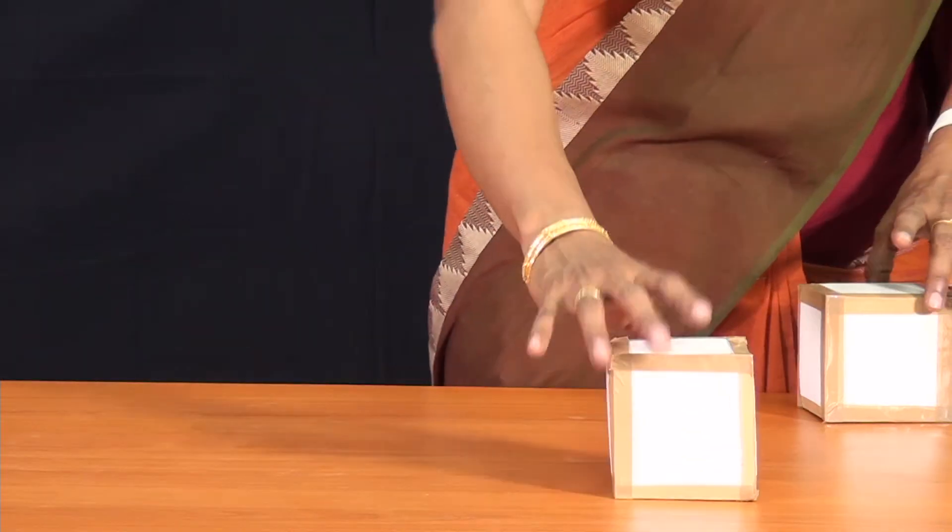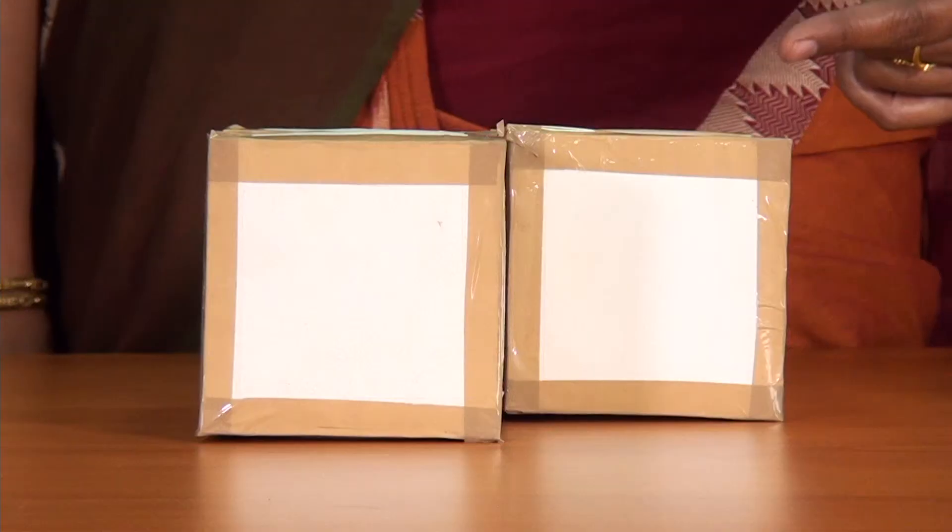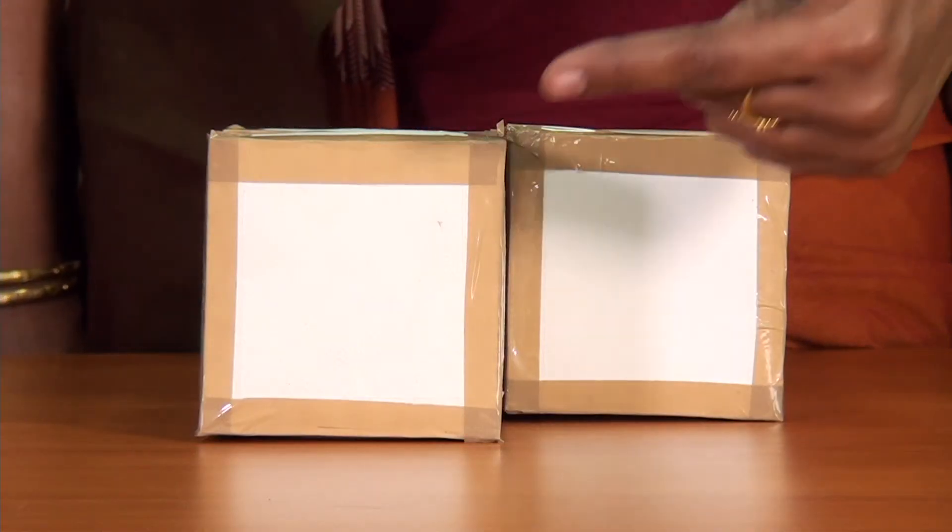Now let us look at another combination of cubes. Look at this object from the front. What do you observe when you see it from the front? Yes, there are 2 squares.